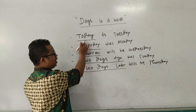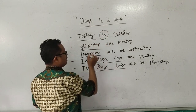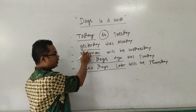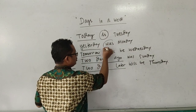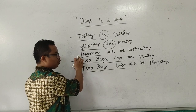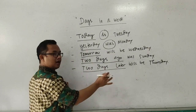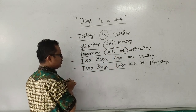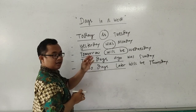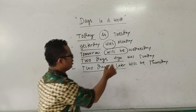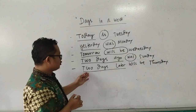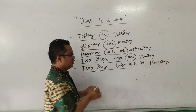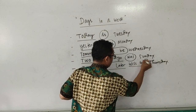Di sini perlu dilihat kalau 'today is', hari ini adalah, kita pakai 'is'. Sedangkan kalau 'yesterday', artinya sudah lewat, kita pakai 'was'. Tomorrow akan berlangsung atau akan terjadi, maka kita pakai 'will be'. Two days ago, karena sama-sama sudah lewat seperti yesterday, maka to be-nya adalah 'was'. Two days later, sama-sama akan terjadi, maka to be-nya adalah 'will be'.